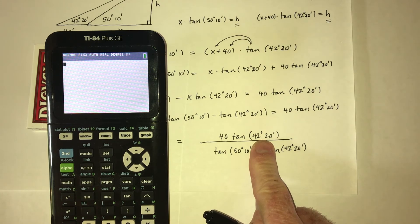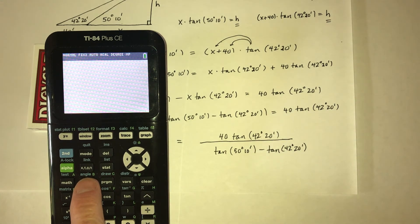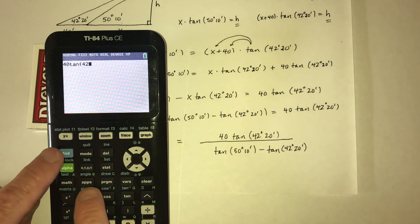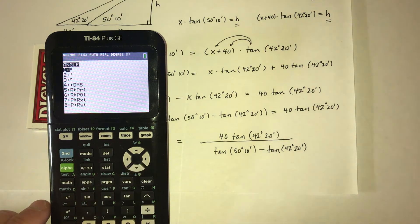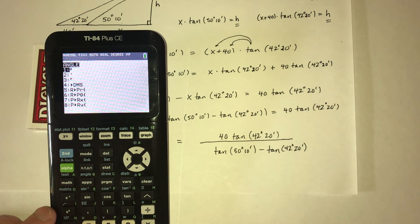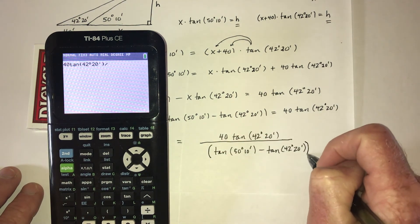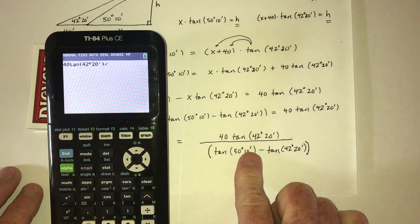So for degrees and minutes, to be able to type that in, you can go right here to angle. First I need to put the 40 tangent, and then 42, and then go second angle, and right there's degrees, number one. So just hit enter, and 20, put second angle, and there's the minute. And then divided by, so the calculator needs to know all of this, including the subtraction. All of this is in the denominator, so I need to put that in parentheses.